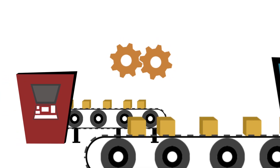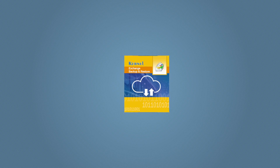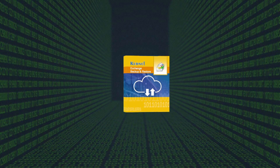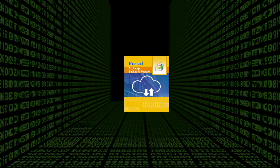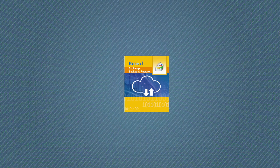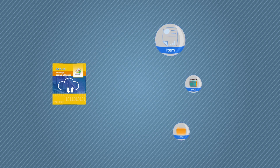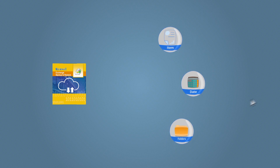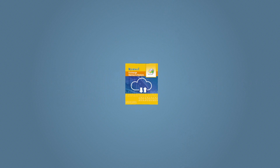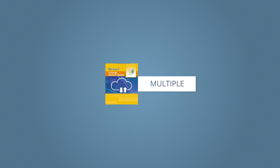In this video, we will discuss the working process of Kernel Exchange Backup and Restore tool, which is helpful in the backup and restoration of exchange mailboxes. This software is embedded with advanced algorithms that make it easy for users to backup and restore their exchange mailboxes. The advanced filtering options enable you to backup and restore mailboxes based on item type, date, folder selection, and more, so that you don't have to backup all data, but just specific mailbox data. The tool is helpful for both single and multiple mailbox backup and restore. Here we will focus on backup and restoration of multiple mailboxes.